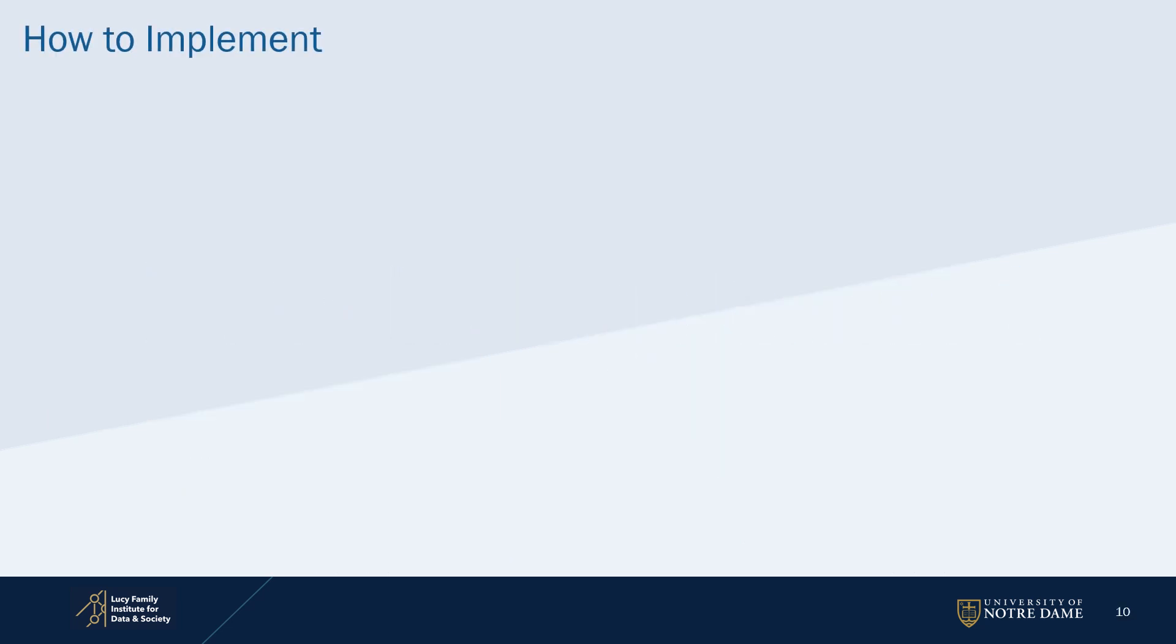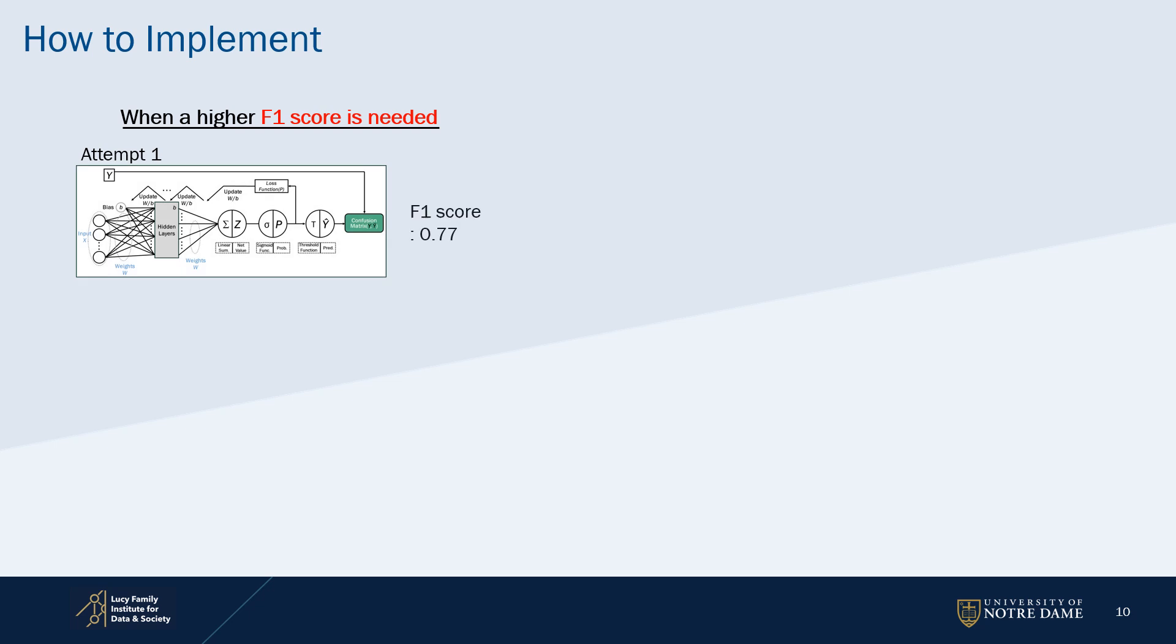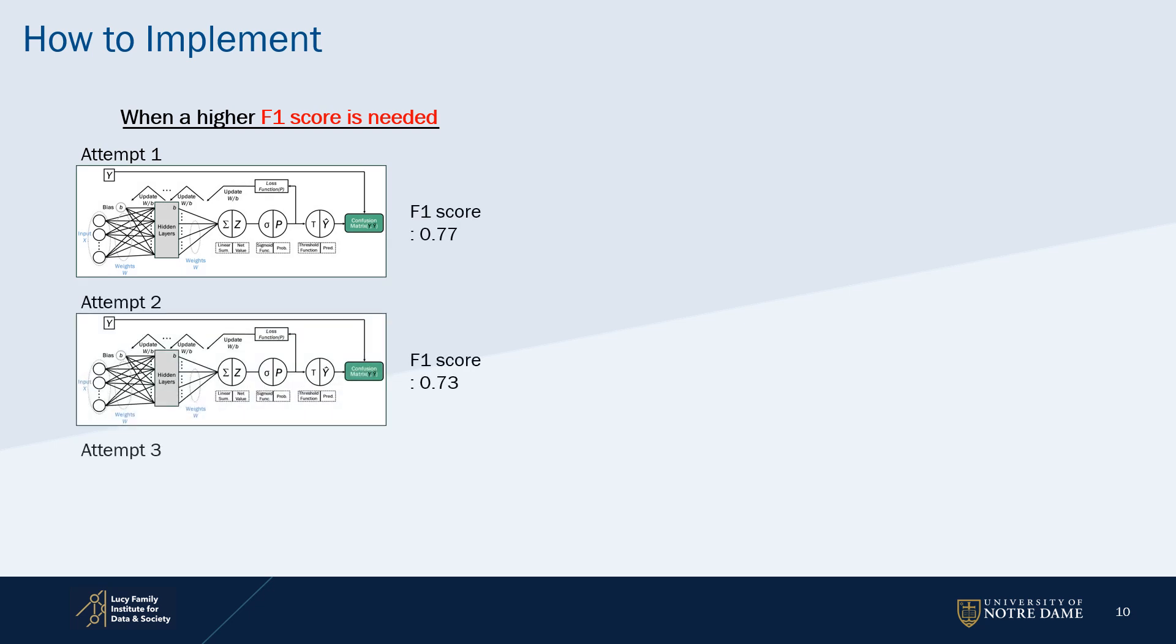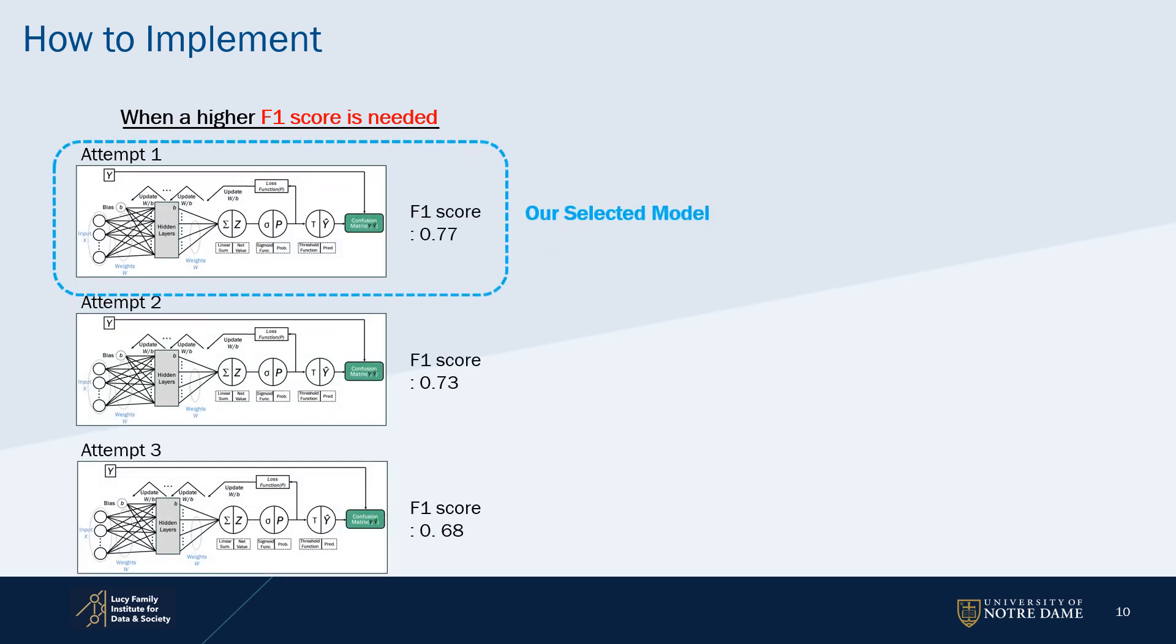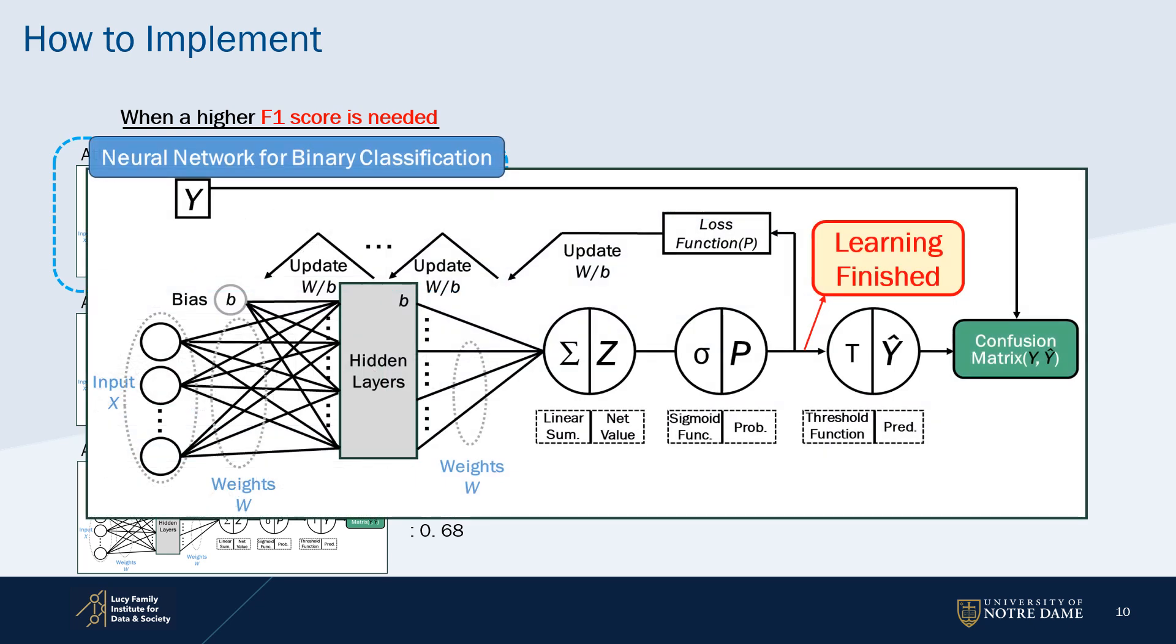How to implement AnyLoss? Each metric is considered the goal of learning since a higher score is pursued when evaluating a model. However, they cannot be set as a goal in a neural network because the confusion metrics can be constructed only after finishing learning.